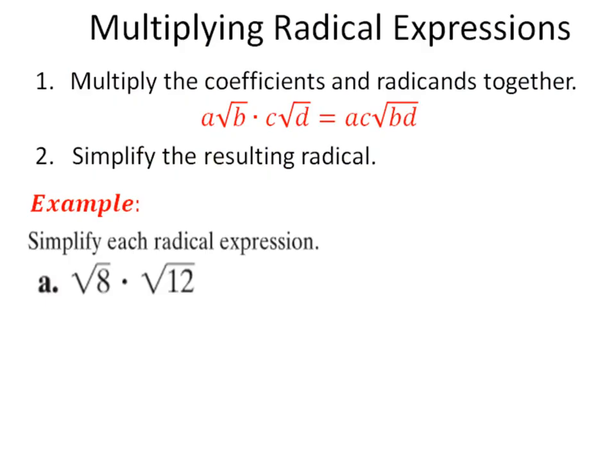Now we're going to begin multiplying radical expressions. The steps are: first, multiply the coefficients together and multiply the radicands together. So if you have a square root of b times c square root of d, you multiply a times c and keep it outside, and b times d and keep it inside. Then simplify the resulting radical expression.